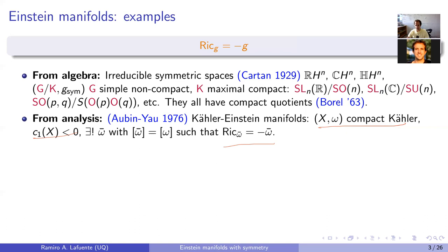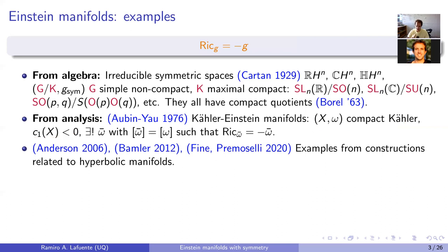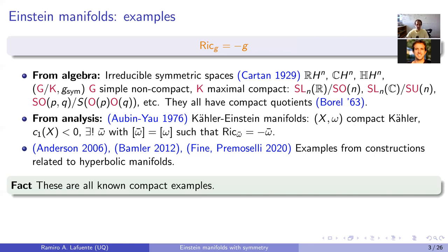There are further analytic examples related to hyperbolic geometry in one way or another, technically demanding on the analytic side, providing compact Einstein manifolds with negative Einstein constant. Remarkably, as far as I know, these are essentially all compact examples of Einstein manifolds with negative Einstein constant — it's very tricky to construct such examples.